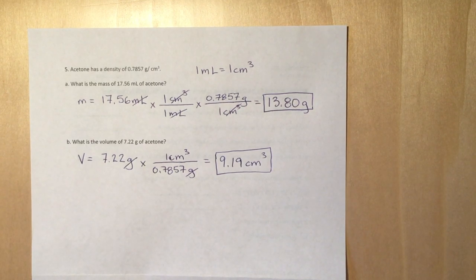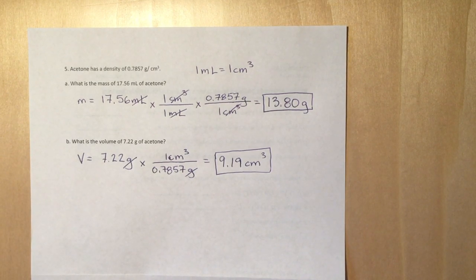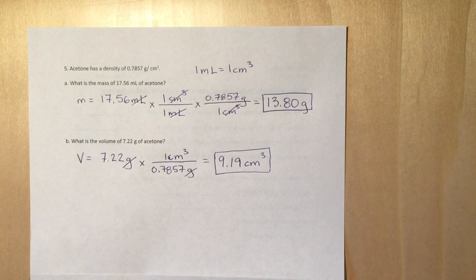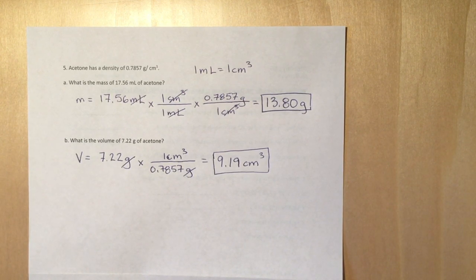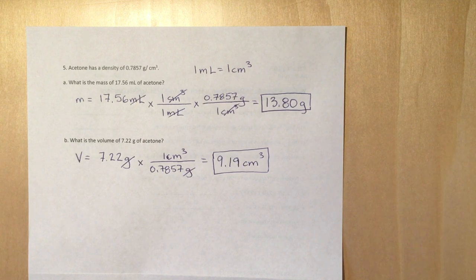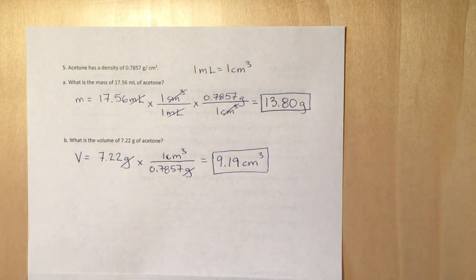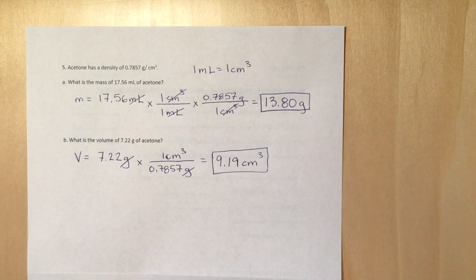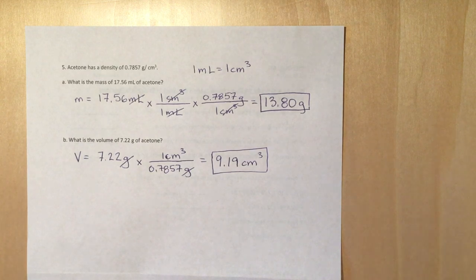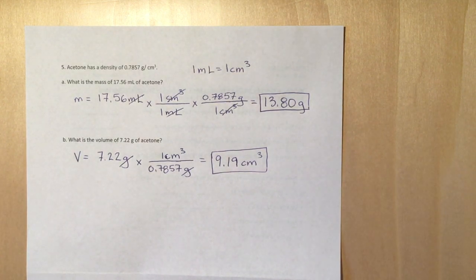This is a two-part example. It says acetone has a density of 0.7857 grams per cubic centimeter. So that density is also a conversion factor. We always have to remember that whenever we have one of those types of units that's a combined unit, we can use it as a conversion factor.